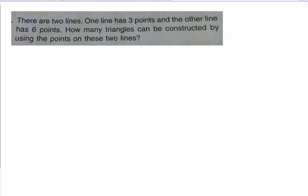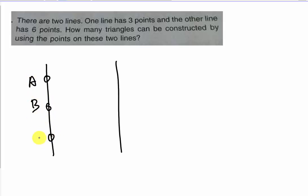What I will do first is draw two lines according to the question. One line has three points — I plot three points here and label them A, B, C. On the other line there are six points, so I plot six points and label them one, two, three, four, five, six. After you plot everything, before you start, you need to construct a triangle.